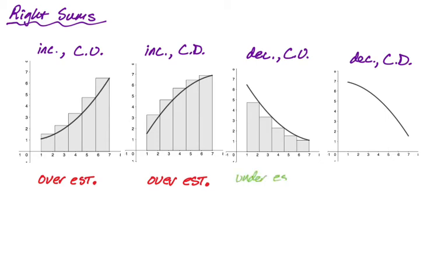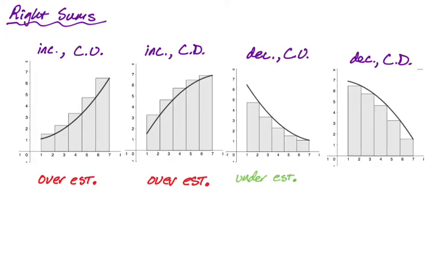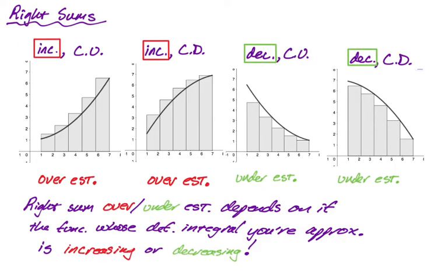Can't stress this enough — you should be drawing these things. You shouldn't just be sitting there thinking; sketch a little picture, it will answer your question. For decreasing concave down, if we draw our sum, we're always inside — getting smaller amounts than we really need — so we must be underestimating. So increasing came with overestimates and decreasing always gave us underestimates. A right sum will over or underestimate depending on if the function is increasing or decreasing: overestimate when increasing, underestimate when decreasing.